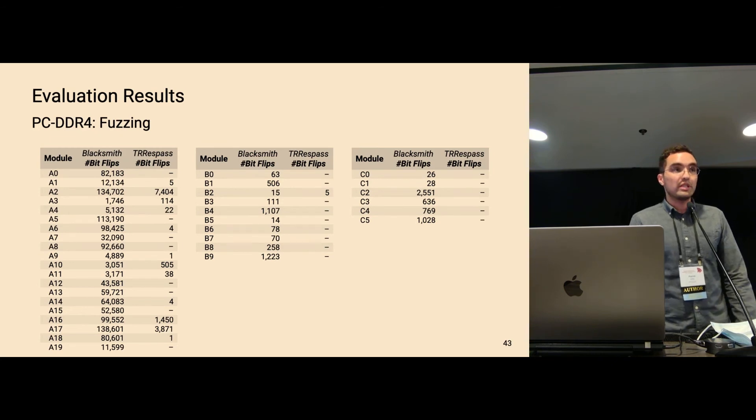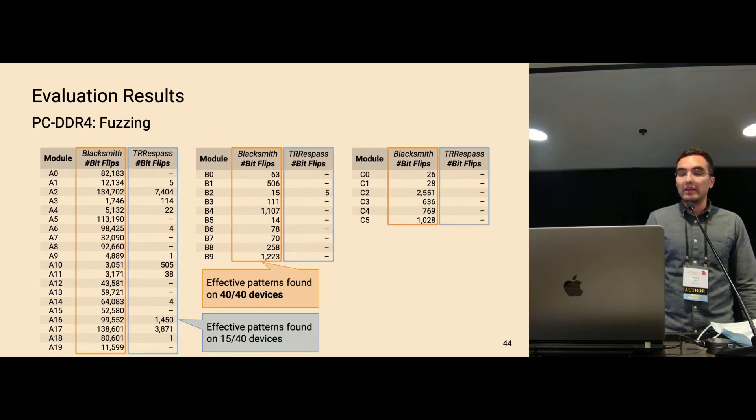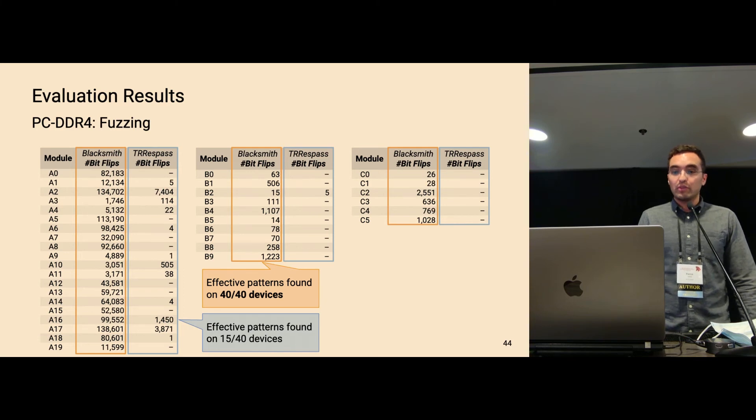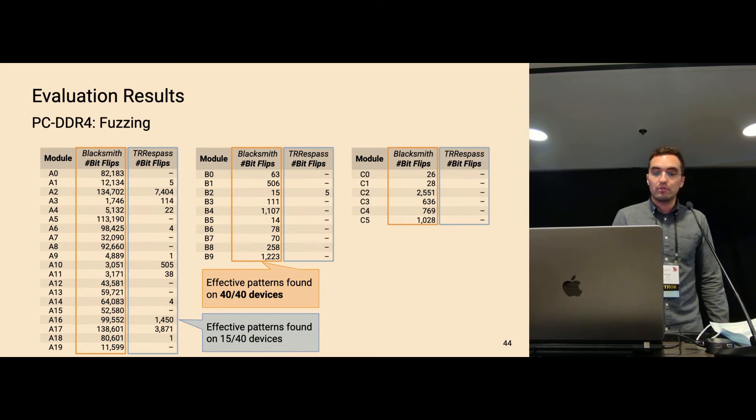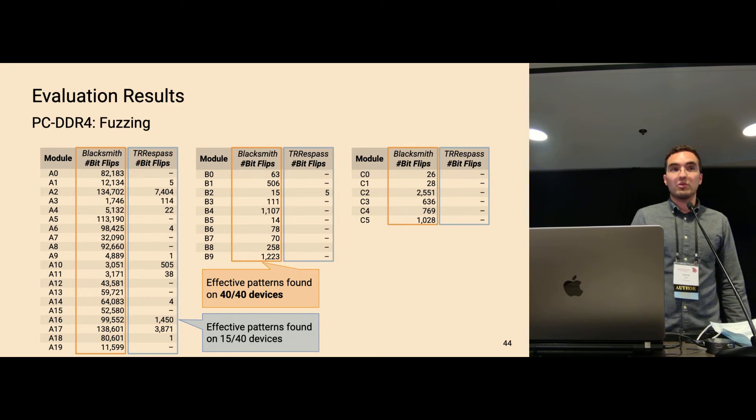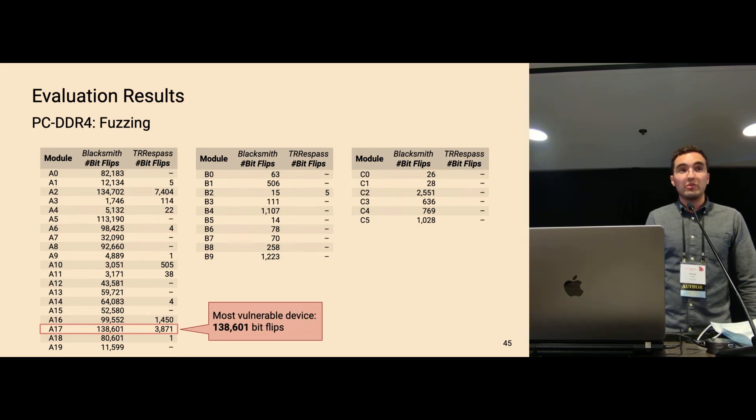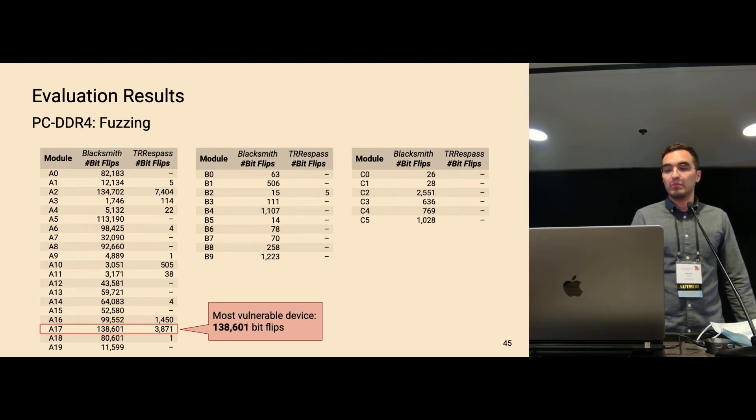And we run Blacksmith on all 40 devices in our test pool. And Blacksmith found effective patterns on all 40 devices, which shows that TRR is broken. And we compared the results to state-of-the-art Rowhammer Fuzzer Trespass, which only found bit flips on 15 of 40 devices. Blacksmith also found a considerably high number of bit flips on some devices, for example, device A17 from Samsung, that we found around 138,000 bit flips. This, of course, also has a significant impact on the exploitation.